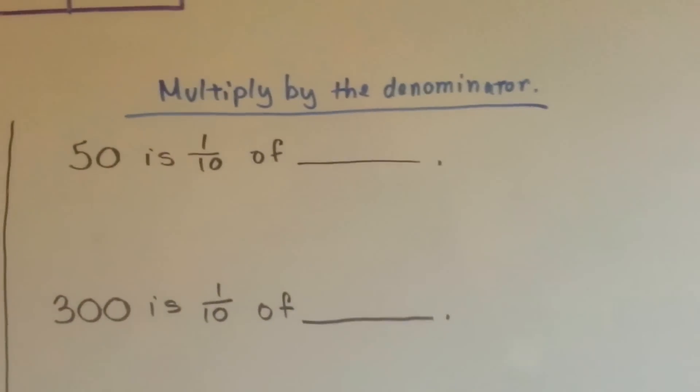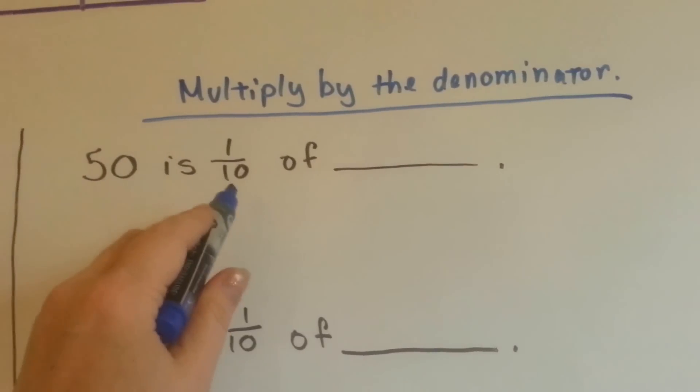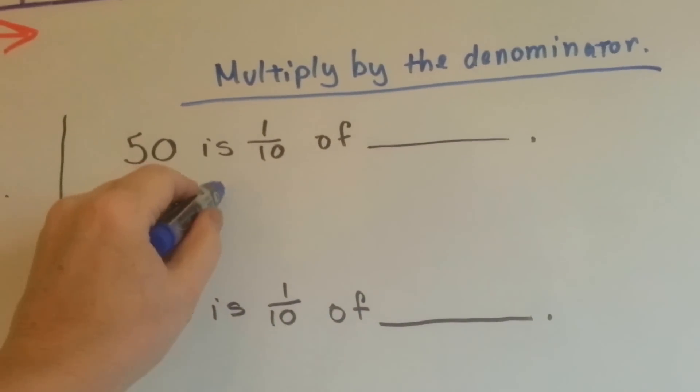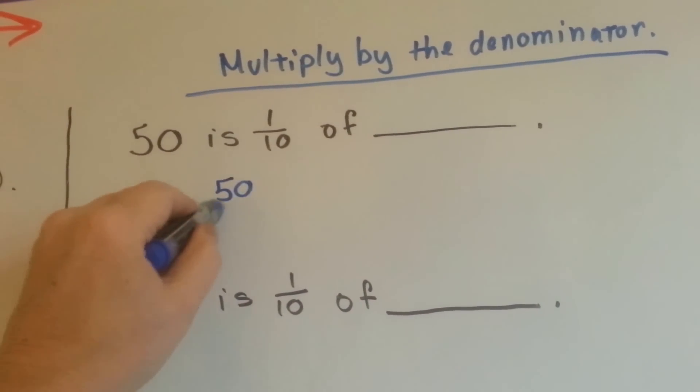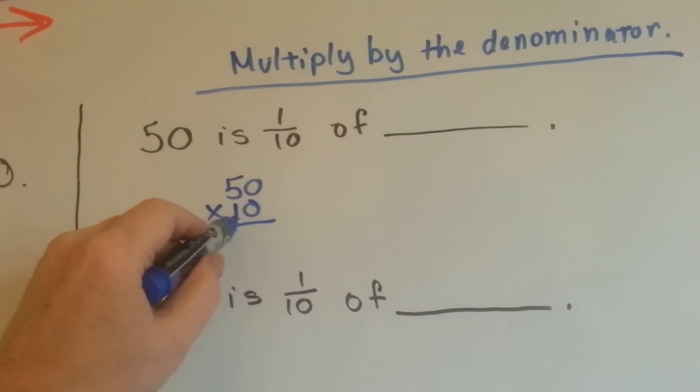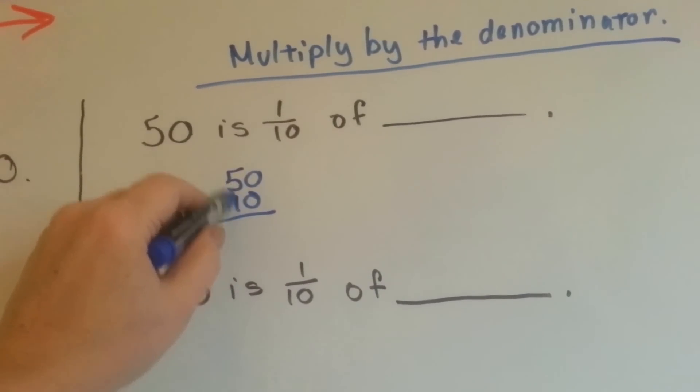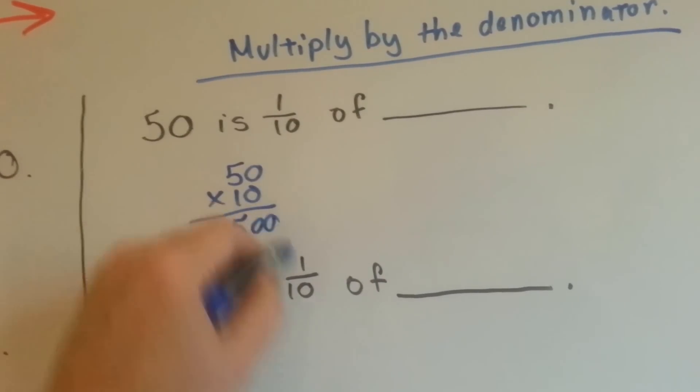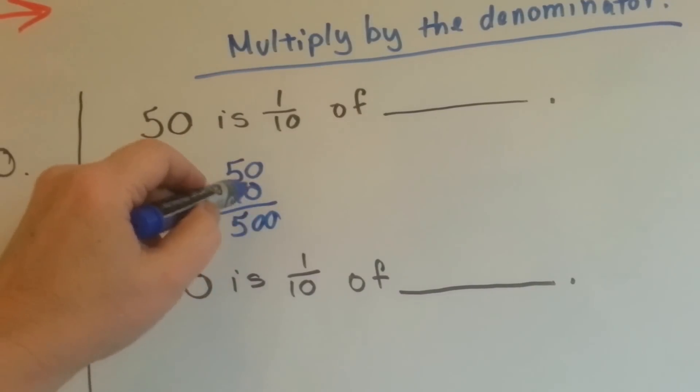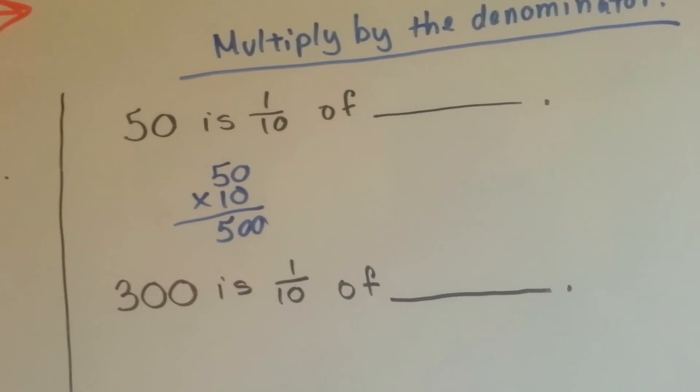Alright, so to find a tenth of a number, we're going to divide, I mean, I'm sorry, we're going to multiply by the denominator. So 50 times 10, 50 times 10, do you know the trick to do this really quick? You do 1 times 5 is 5, and you add the two zeros. We could do it the long way. 0 times 0 is 0, 0 times 0 is 0, 1 times 0 is 0, 1 times 5 is 5, and get 500.